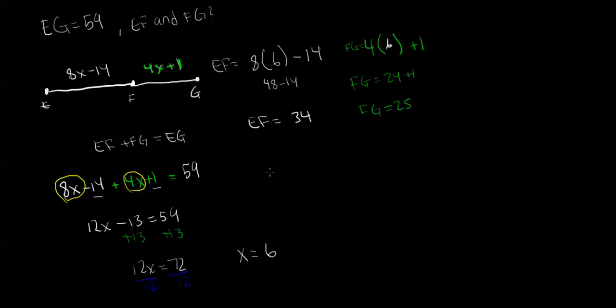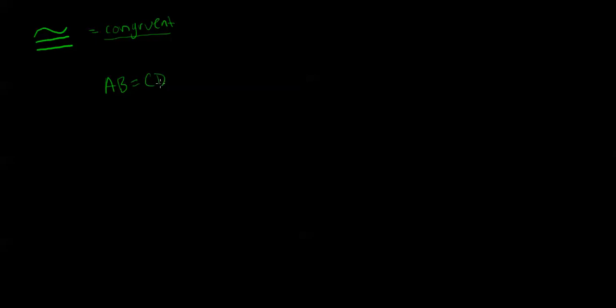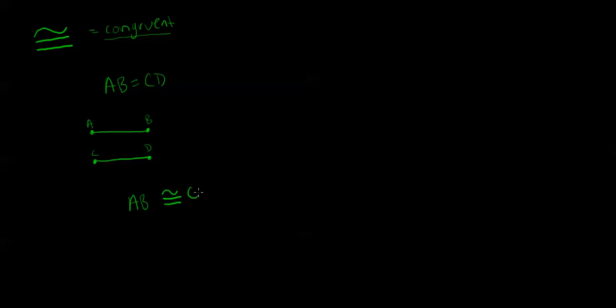Now we're going to look at congruent segments. When numerical expressions have the same value, you say that they are equal. If two segments have the same length, then the segments are congruent segments. For example, AB equals CD means they have the same length. Because AB equals CD, AB and CD are congruent segments. You can also say it the other way: because AB is congruent to CD, then AB equals CD.